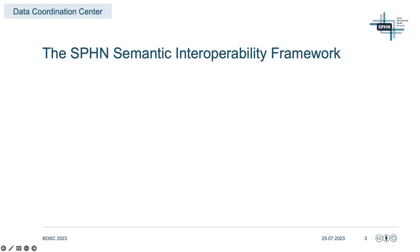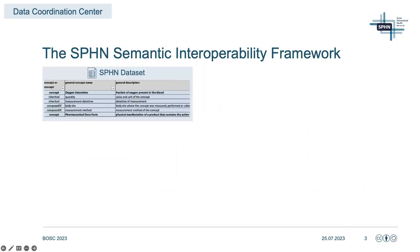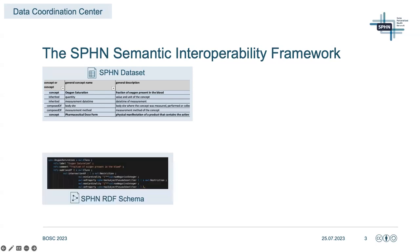The Data Coordination Center is coordinating the infrastructure development for semantic interoperability and has built the SPHN dataset, which is an Excel file that defines the semantics of the data. From the SPHN dataset, an SPHN RDF schema is built to encode the semantics into a standard and flexible format. While initially this was a manual and tedious process, the dataset-to-RDF tool has been developed to facilitate the transformation of the SPHN dataset into the SPHN RDF schema automatically.